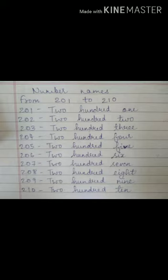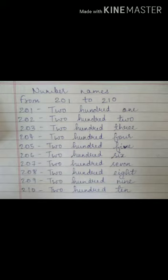203 — T-W-O 2, H-U-N, D-R-E-D 100, T-H-R-E-E 3. 203. 204 — T-W-O 2, H-U-N, D-R-E-D 100, F-O-U-R 4. Now, 205 — T-W-O 2, H-U-N, D-R-E-D 100, F-I-V-E 5. 205.